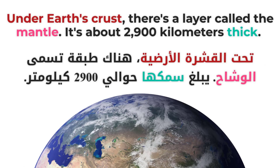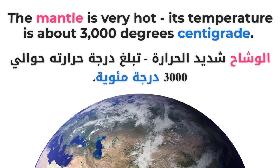Under Earth's crust, there's a layer called the mantle. It's about 2,900 kilometers thick. The mantle is very hot. Its temperature is about 3,000 degrees centigrade.